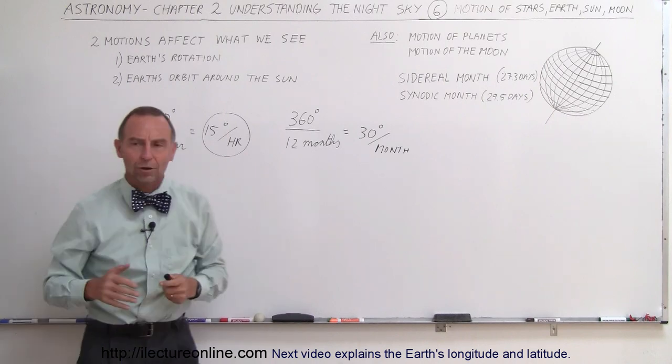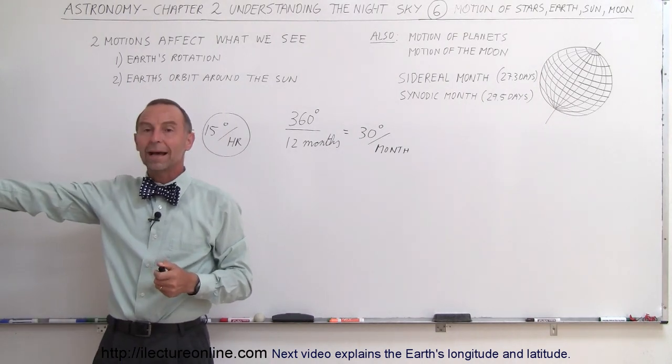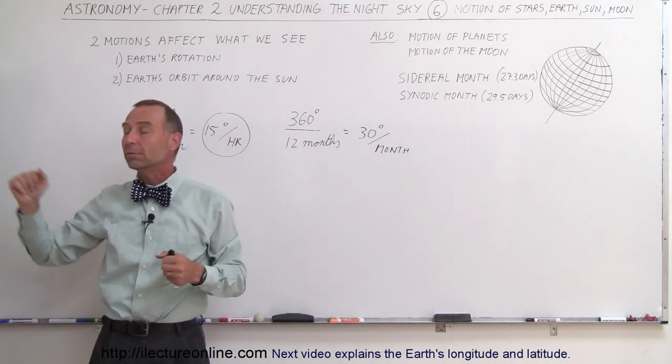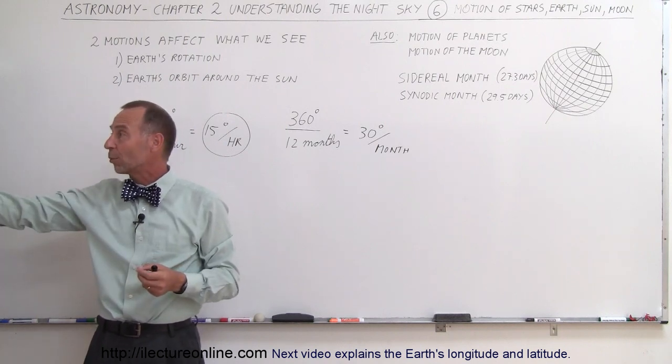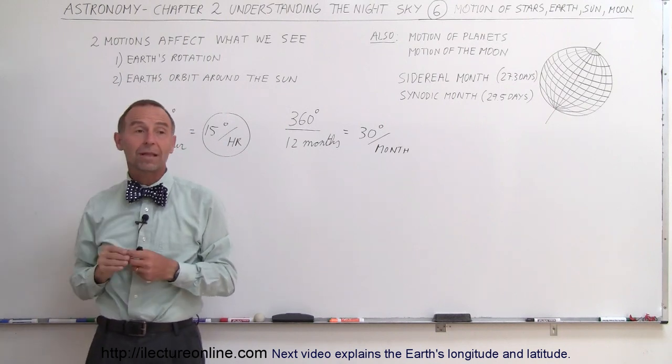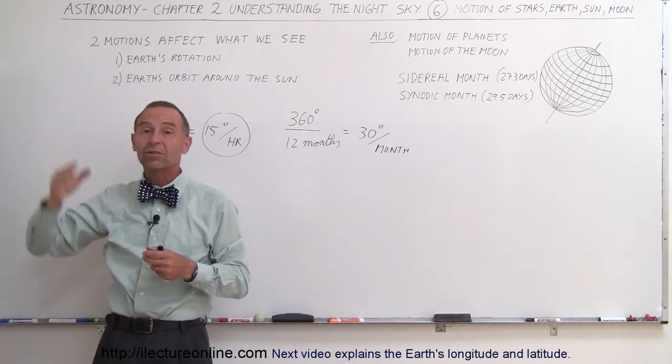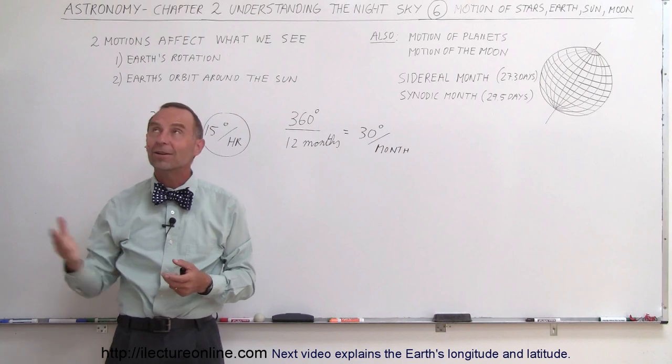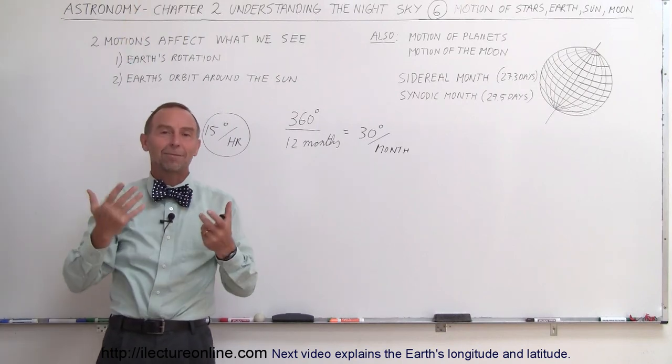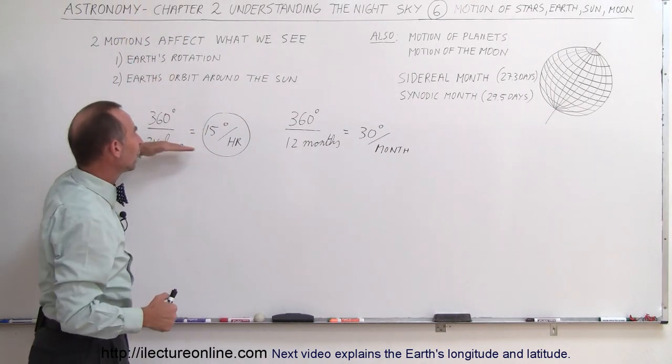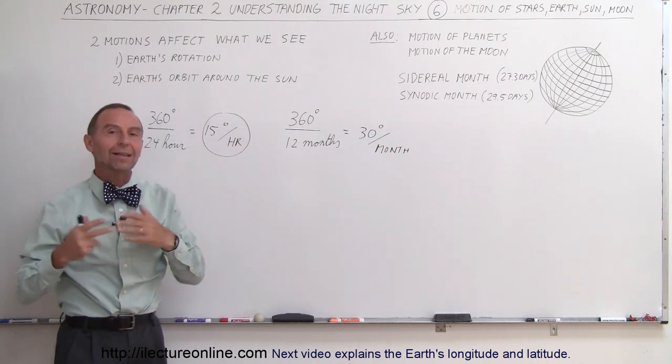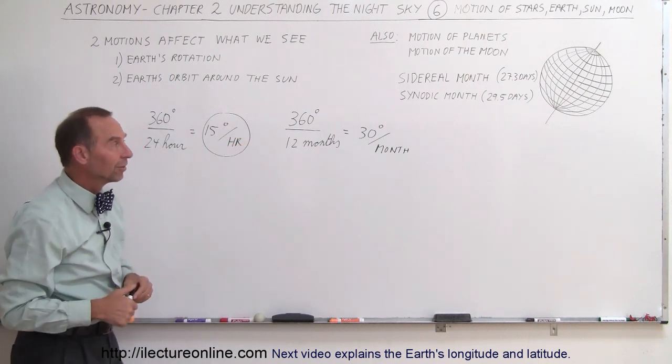So, things move at 15 degrees per hour throughout each night, and move at 30 degrees per month, throughout the year. So, if a star rises at midnight, let's say in April, we come back in May, the star will already be at an angle of 30 degrees at midnight, we come back in June, it will be at an angle of 60 degrees relative to the horizon, and then a month later, it will be directly above us at midnight, and so forth. So, that's how those two motions affect where things are, and how they move throughout the night, and from night to night.